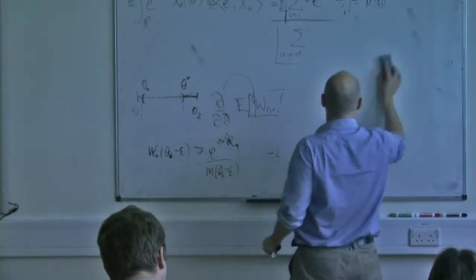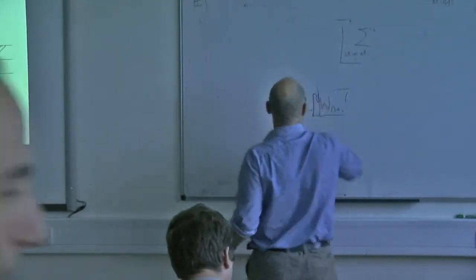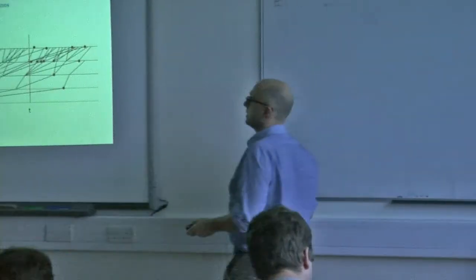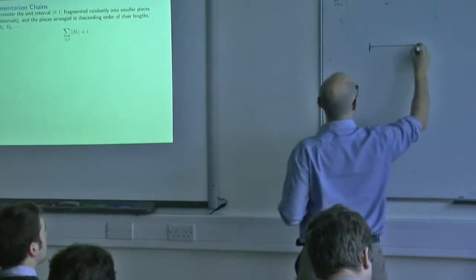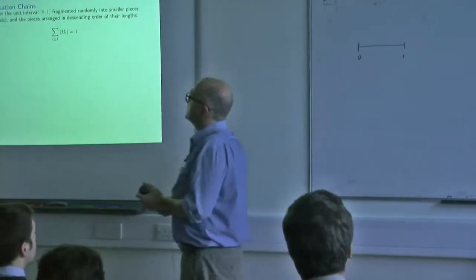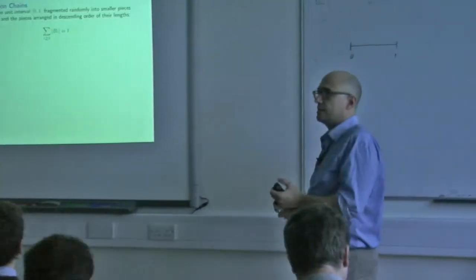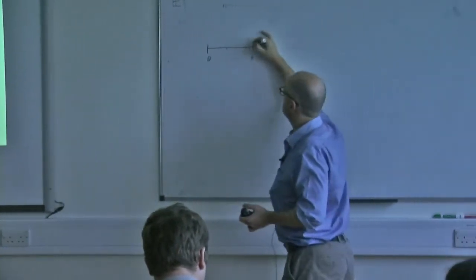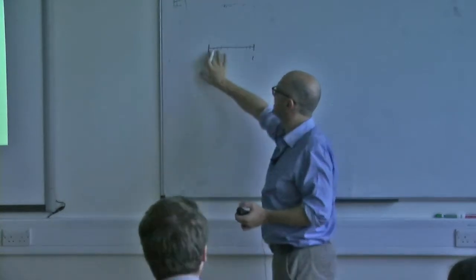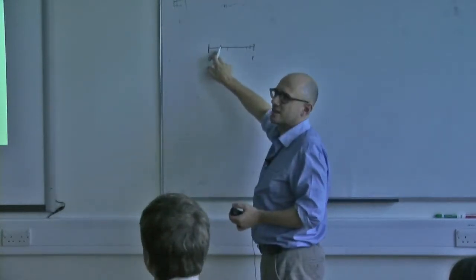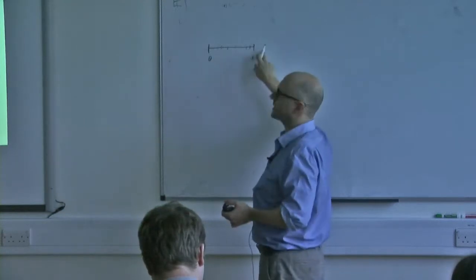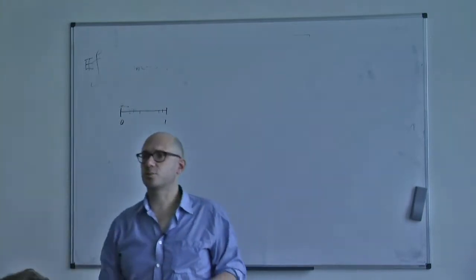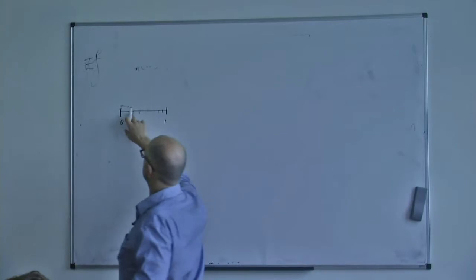Imagine you took an interval [0,1] and you're going to start breaking it randomly into little bits. Chop it into little pieces. You could think of these as masses - the lengths are in a sense masses. The length of this is one, so think of this object as having unit mass, and then the lengths of these partitions are essentially masses as well. So we break the unit mass into sub-masses.